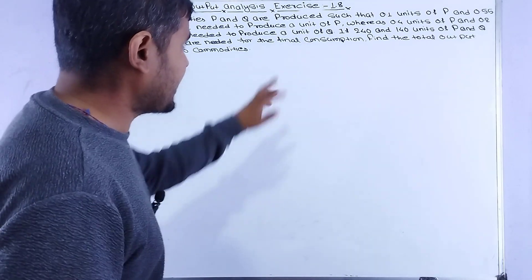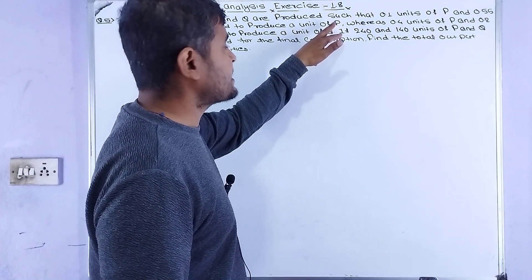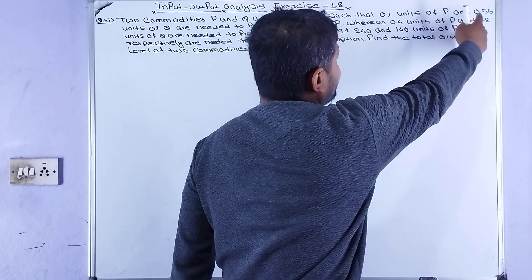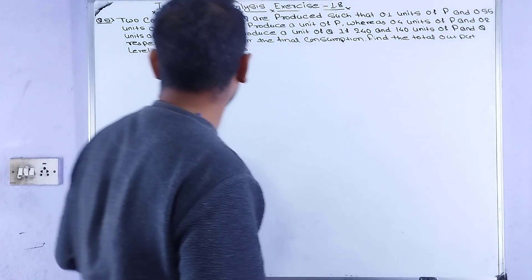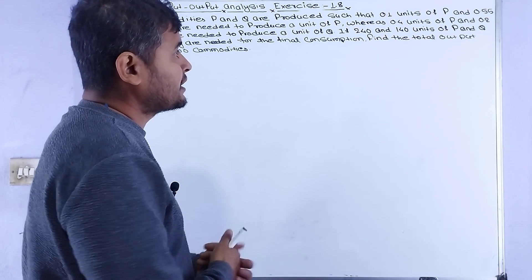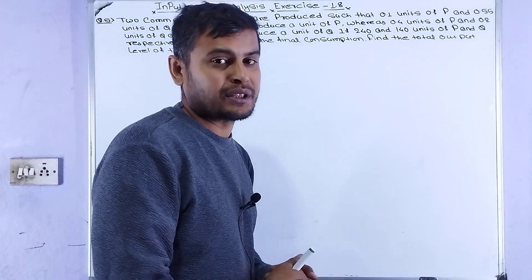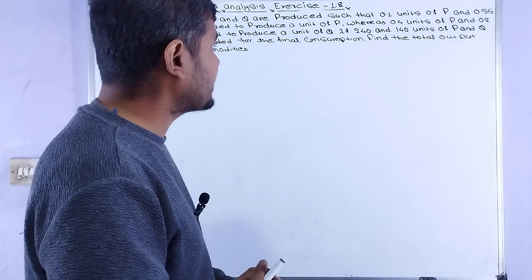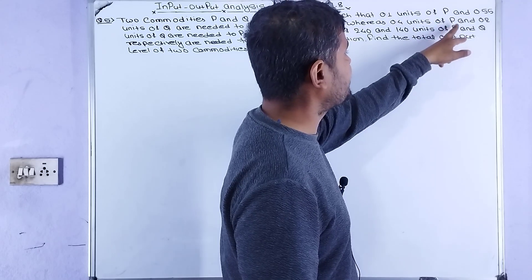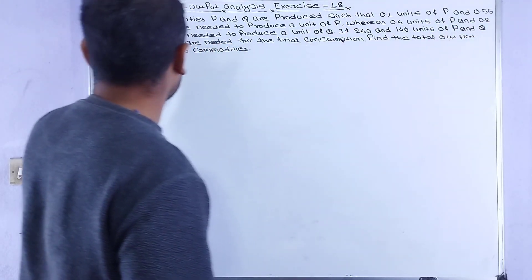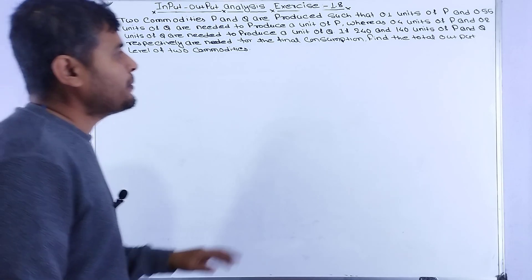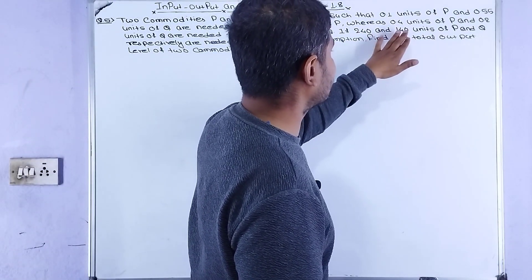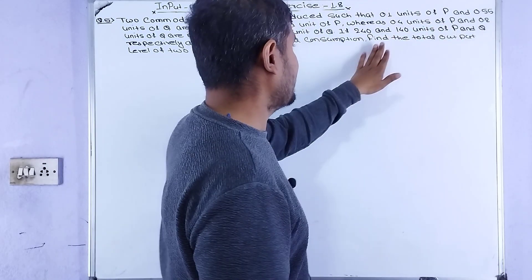Let me explain the problem. To produce one unit of P, we need 0.1 units of P and 0.55 units of Q as inputs. Similarly, to produce one unit of Q, we need 0.4 units of P and 0.2 units of Q as inputs.